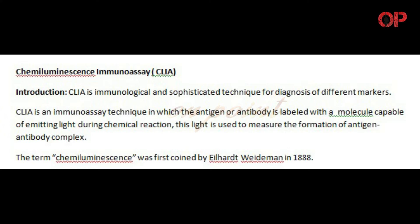Introduction. CLIA is an immunological and sophisticated technique for diagnosis of different markers. CLIA is an immunoassay technique in which the antigen or antibody is labeled with a molecule capable of emitting light during a chemical reaction; this light is used to measure the formation of antigen-antibody complex. The term chemiluminescence was first coined by Eilhard Weidemann in 1888.